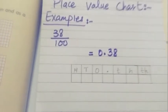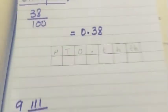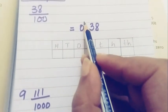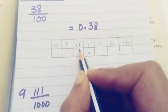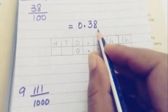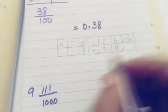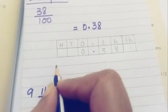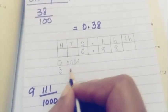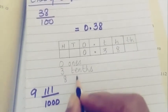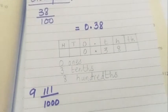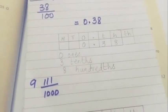Now let's place 0.38 in the place value chart one by one. The decimal point goes here. After the decimal point, the first digit goes in tenths and the second digit goes in hundredths. So 0 goes in ones, 3 goes in tenths, and 8 goes in hundredths. You can write the numbers in the decimal place value chart in different methods.